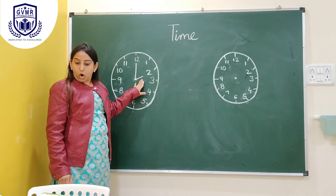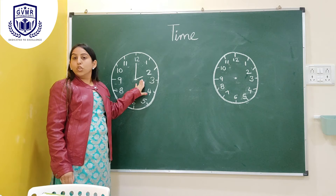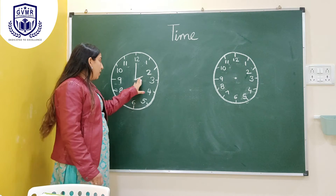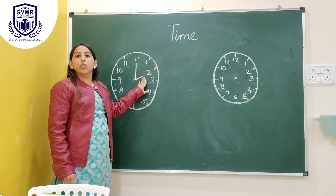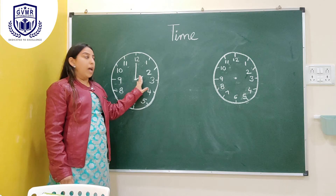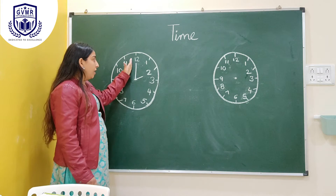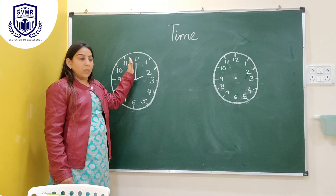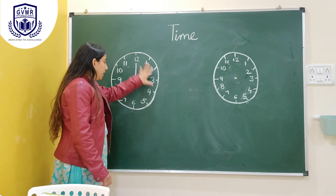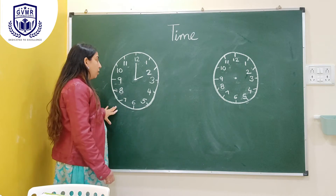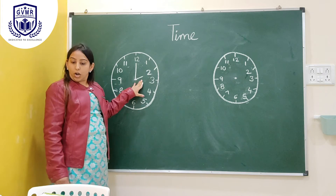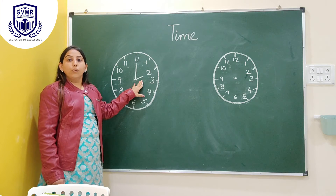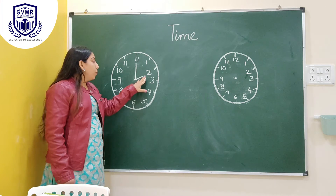The short hand shows the hours, and the long hand shows the minutes. In this clock, the short hand points to 2.